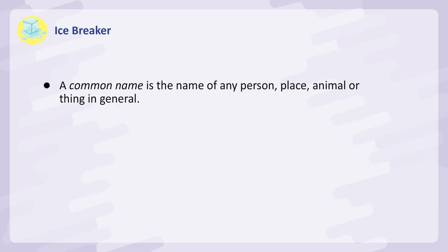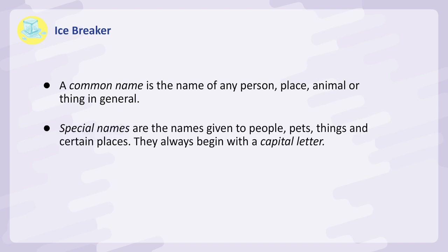A common name is the name of any person, place, animal, or thing in general. Special names are the names given to people, pets, things, and certain places. They always begin with a capital letter.